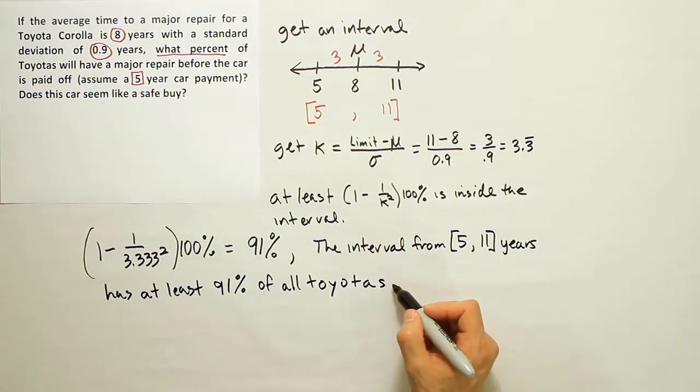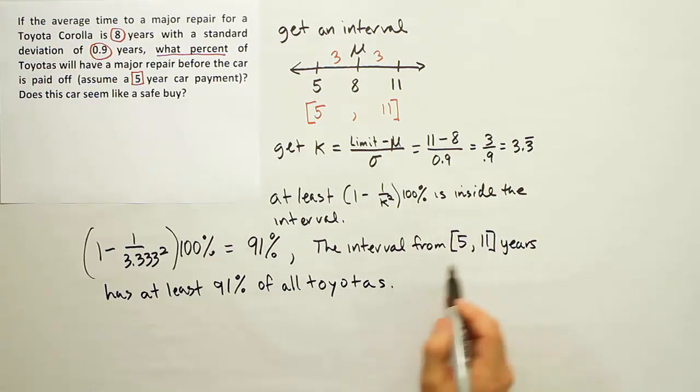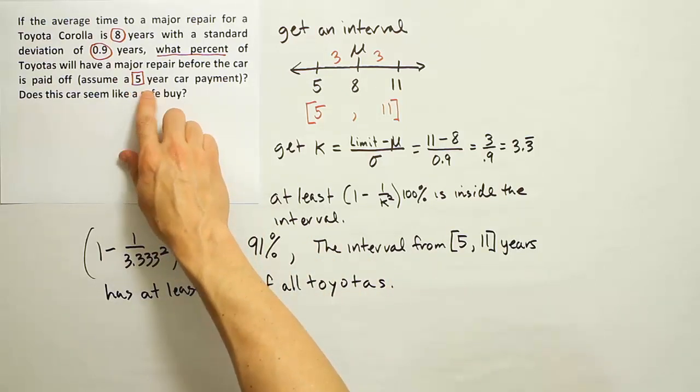Alright, so this means that the interval from 5 to 11 years has at least 91% of all Toyotas. Should have capitalized that T, right? It's disrespectful to Toyota. Sorry about that, Toyota. Alright, so this interval contains at least 91% of the Toyotas. But we're not asked about that interval, right? We're really not.